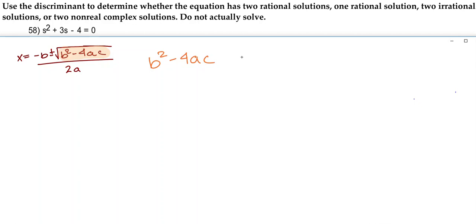Now if the discriminant ends up being a negative number, meaning it is less than 0, then we're going to have two non-real complex solutions. If it ends up being equal to 0, then we're going to have one rational solution.